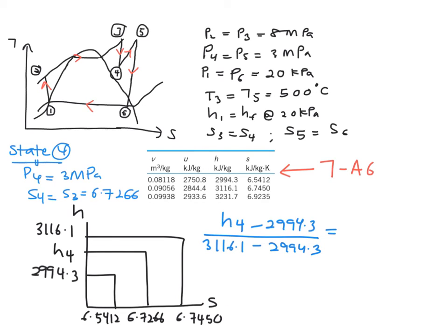And you equate it with your S range down here, where your H4 corresponds to 6.7266, minus the lower value, which is 6.5412, over the highest value, 6.7540, minus the same lower value, which is 6.5412.